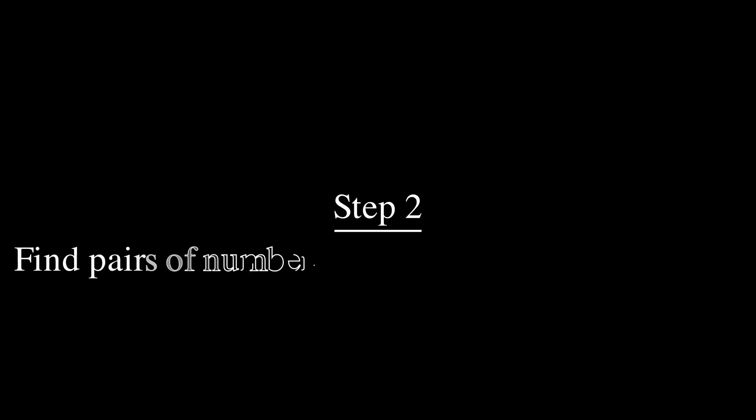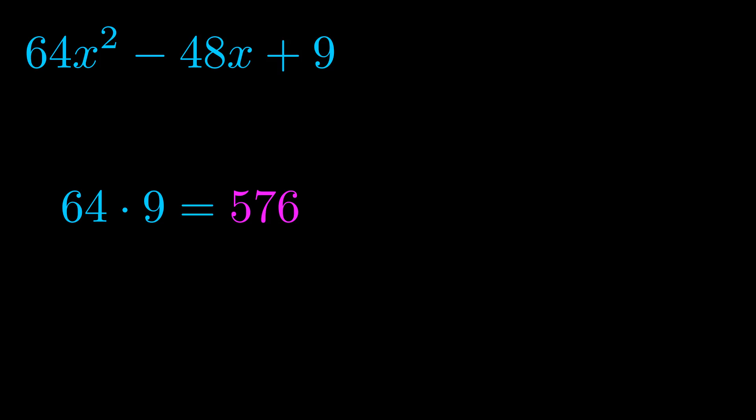Step two is to try to find all of the pairs which multiply to this number. Now turns out you don't really need to find all of them but go ahead and write down as many numbers as you can that multiply to the magenta value for now. Pause the video and resume when you're ready to continue.